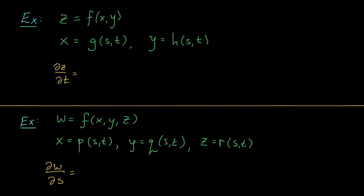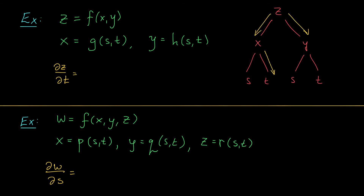Again, we can model this situation with a tree diagram. The big function z is at the top, the intermediate variables x and y are at level two, and at the bottom we have our independent variables. x depends on both s and t, y depends on both s and t. In this question, we're looking for the partial derivative of z with respect to t — it has to be a partial derivative because ultimately z depends on two independent variables. Just like before, we follow every branch that leads from z down to t, ignoring branches that lead to other independent variables. We follow the branches, multiply the derivatives, and add the results. So our partial derivative is equal to partial z over partial x times partial x over partial t, plus partial z over partial y times partial y over partial t. And there you go, it really is that simple.